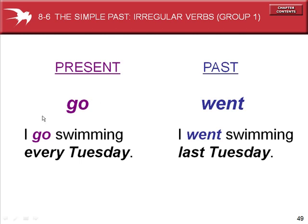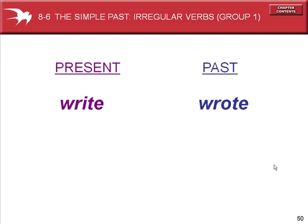Go is also an irregular verb. The present tense is go. I go swimming every Tuesday. The past tense is went. I went swimming last Tuesday.